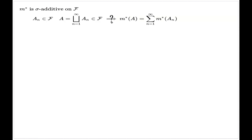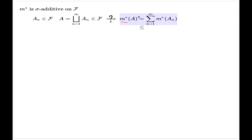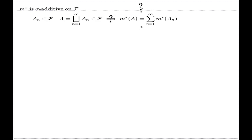I put a question mark to emphasize that this equality is the content of the proof. The inequality in one direction — that the outer measure is σ-semi-additive — we have for free. Our job is to prove the opposite inequality, which is the one under the question mark.